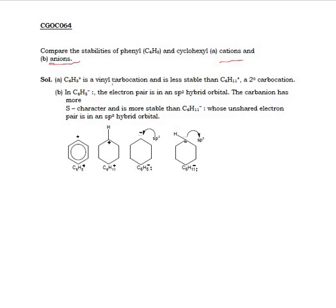For this, first we have to draw the phenyl carbocation, because we talk about the cations and the anions. For the phenyl cation, it will be a positive charge on benzene. This is also a vinyl carbocation.